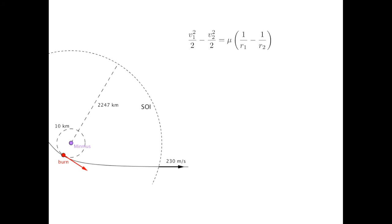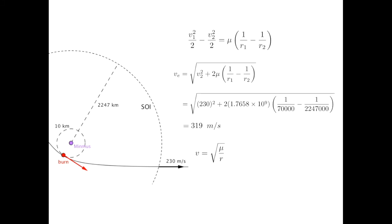In this formula, V2 is 230 meters per second, R1 is 70 kilometers, and R2 is 2,247 kilometers. What we want is V1. To help out, I'll just rearrange for V1. I took the liberty of replacing the V1 with VE, as this will be our required ejection velocity. Substituting in and pushing through a calculator gets 319 meters per second. Of course, it's not like we're starting from a standstill. We use our orbital velocity formula one more time to get an orbital velocity of 159 meters per second. This means we need to add 160 meters per second to our current velocity.